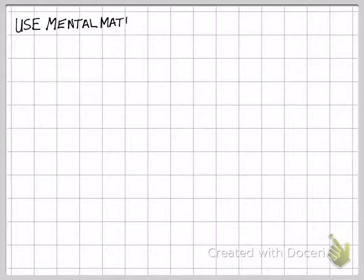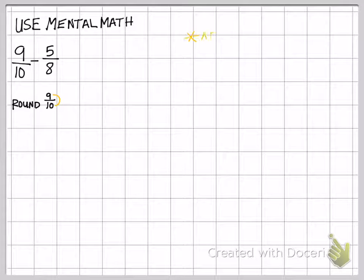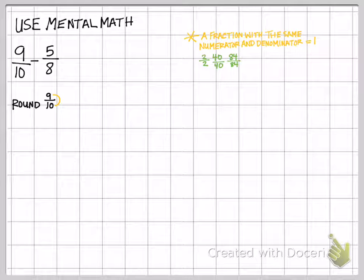The other strategy is just to use mental math. It's not as easy as a visual to see it, but it is a little bit quicker because you don't have to create a number line. Now, like I said, I've reminded you a little bit in yellow and green to the right, but it says a fraction with the same numerator and denominator equals 1. For example, 2/2 is 1, 40/40 is 1, 84/84 is 1. So keep that in mind when using this mental math strategy.